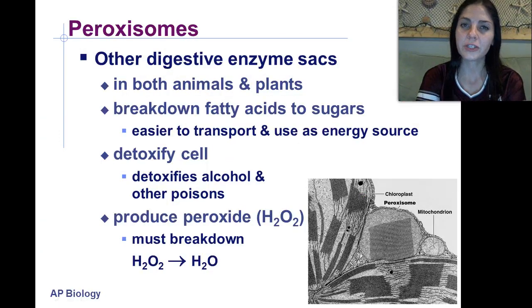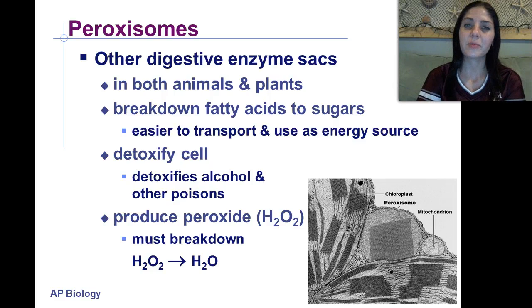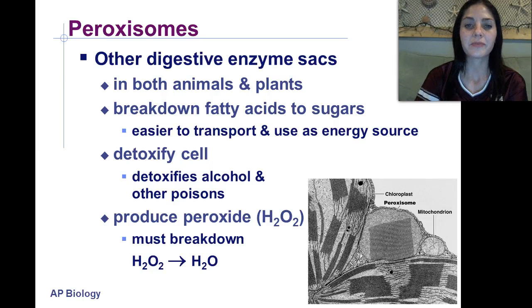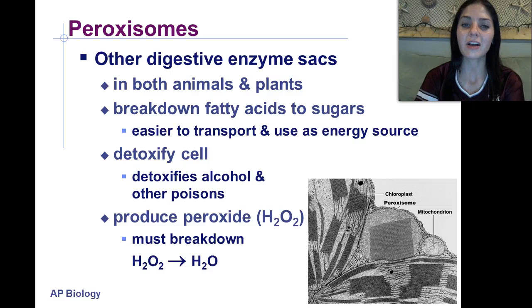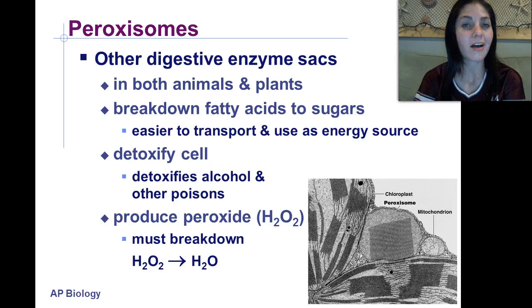The next organelle we're going to talk about is peroxisomes — another digestive enzyme sac found in both plant and animal cells. They break down fatty acids into sugars, which are much easier to use and store as a source of energy and easier to transport. Peroxisomes are also responsible for detoxifying the cell from alcohol and other poisons like drugs.